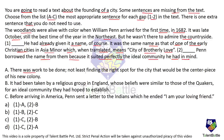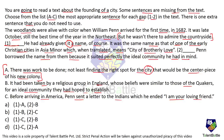The three options are: A — 'There was work to be done, not least finding the right spot for the city that would be the centerpiece of his new colony.' B — 'It had been taken by a religious group in England whose beliefs were similar to those of the Quakers for an ideal community they had hoped to establish.' C — 'Before arriving in America, Penn sent a letter to the Indians which he ended, I am your loving friend.' After 'he wasn't there to admire the countryside,' the blank follows, and then 'he had already given it a name.' The word 'it' refers to the city, which gets introduced in statement A — 'finding the right spot for the city.' So statement A fills blank 1.